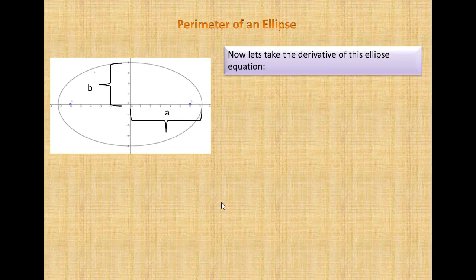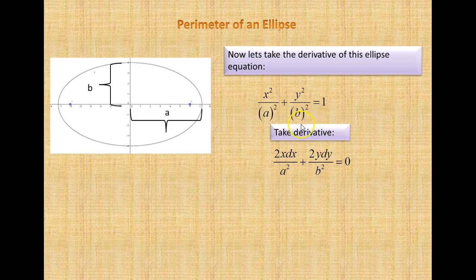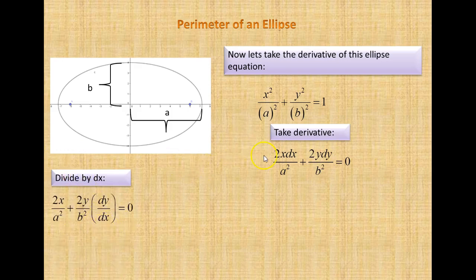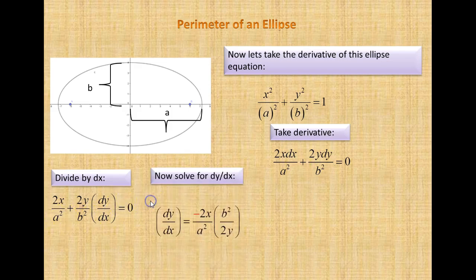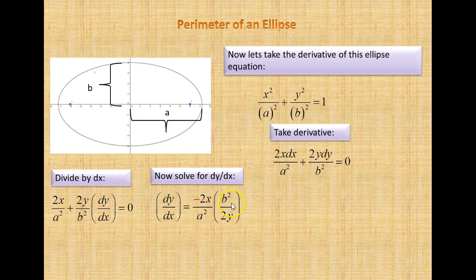Now let's take the derivative of the ellipse equation. The derivative of x squared is 2x dx, and the derivative of y squared is 2y dy. Dividing through by dx, and then solving for dy/dx, we get dy/dx is equal to minus xb squared divided by ya squared.